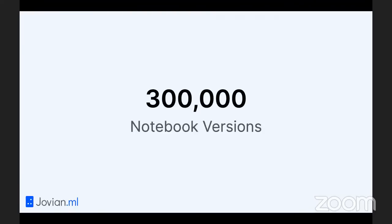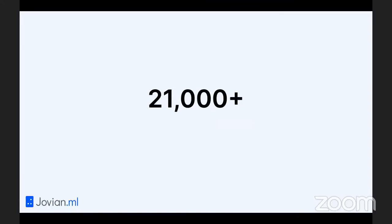300,000 is the number of notebook versions that were saved — the number of times everyone participating in the course ran jovian.commit. Then more than 21,000 assignment submissions: about 17,000 were for assignments one, two, and three, and another just over 4,000 were course project submissions.